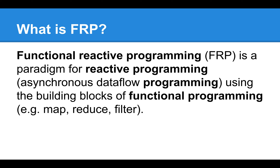The state of our application at any given time is changed by users performing events. Functional Reactive Programming is a way of working with those asynchronous event streams using functional primitives like Map, Reduce, and Filter. It means you don't need to think about how your application gets from start to finish by modifying global state — you think about how to transform data in a purely functional way to derive your application state.